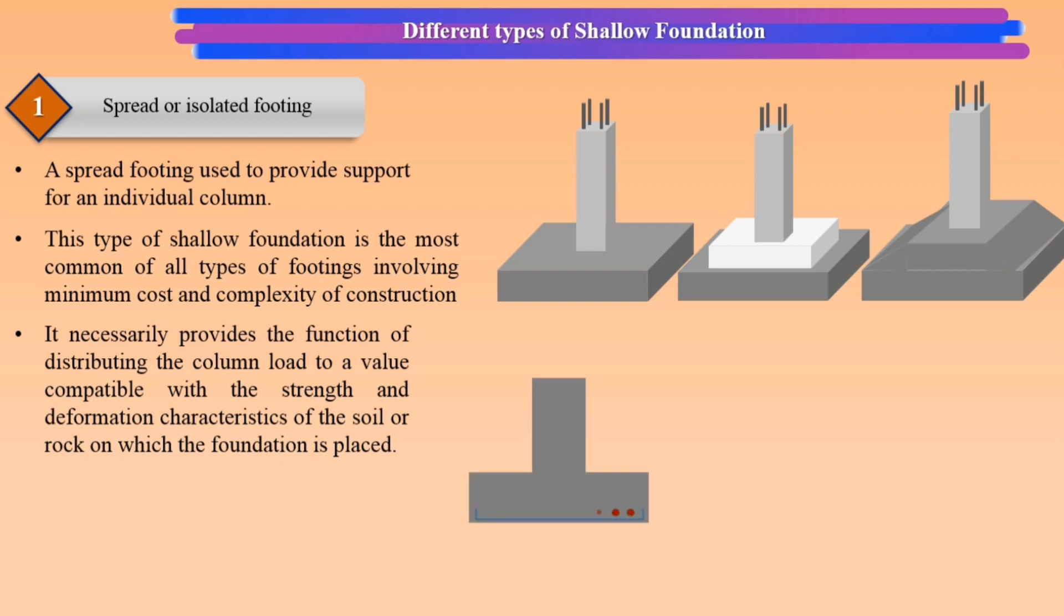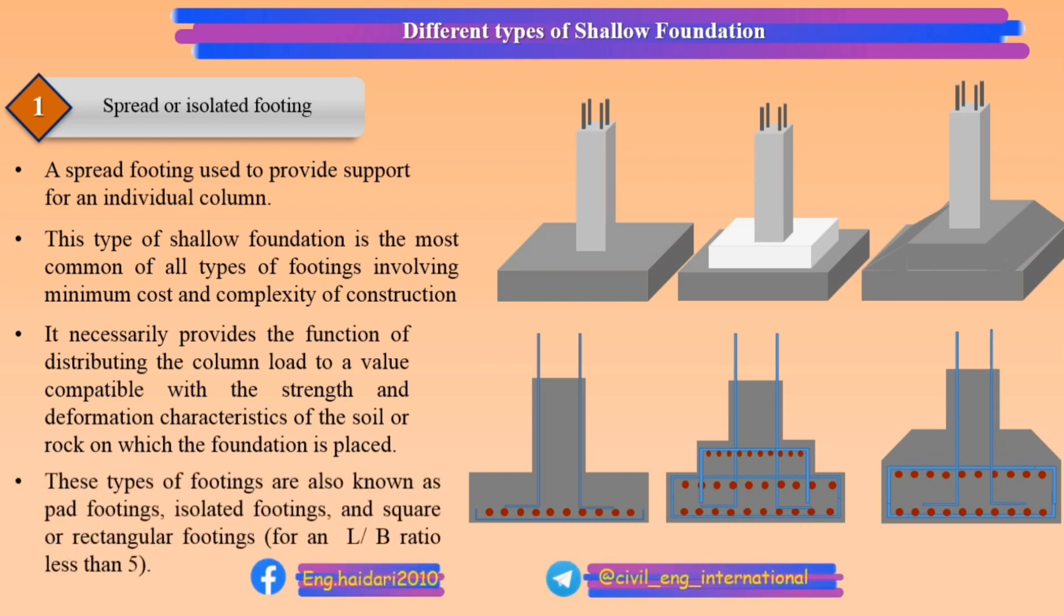It necessarily provides the function of distributing the column load to a value compatible with the strength and deformation characteristics of the soil or rock on which the foundation is placed. These types of footings are also known as pad footings, isolated footings, and square or rectangular footings for an L/B ratio less than 5.